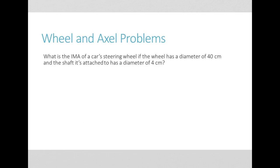What is the IMA of a car's steering wheel if the wheel has a diameter of 40 centimeters and the shaft it's attached to has a diameter of 4 centimeters? So this is my wheel, this is going to be my axle. And I know my equation is IMA equals the radius of my wheel divided by the radius of my axle.